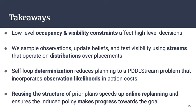Overall, the takeaways are: first, low-level geometric constraints can impact what actions you take at a high level in terms of what to manipulate to receive possible observations. We deal with partial observability by planning in belief space, using streams to sample observations, compute posterior beliefs, and test visibility. We use self-loop determinization to reduce planning to a deterministic PDDLStream problem with action likelihoods and costs. Finally, we reuse the structure of sequentially found plans during online replanning to make planning more efficient and ensure the induced policy makes progress toward the goal. Thank you.